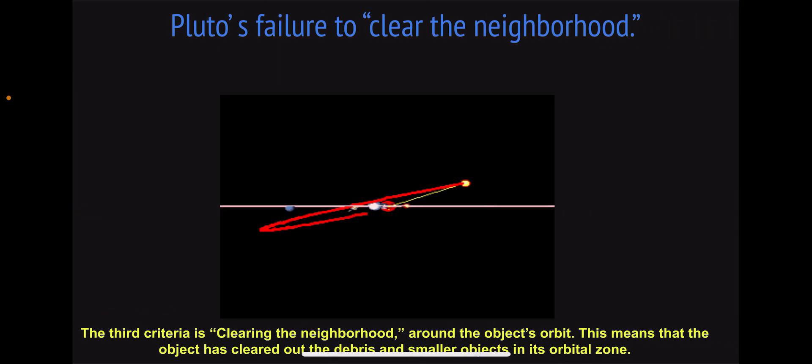And for the third criteria in clearing the neighborhood, this means that the object has cleared out the debris and smaller objects in its orbital zone. Pluto has not achieved this gravitational dominance and as a result has failed to clear its neighborhood.